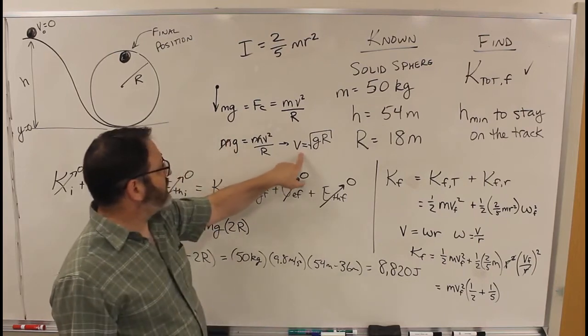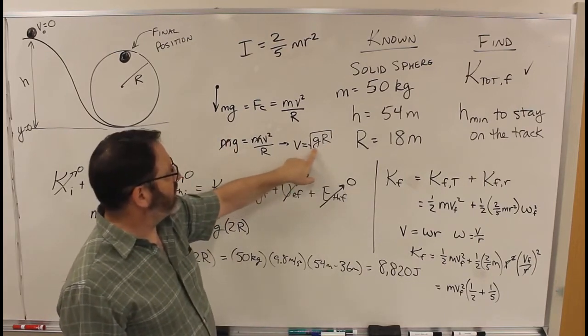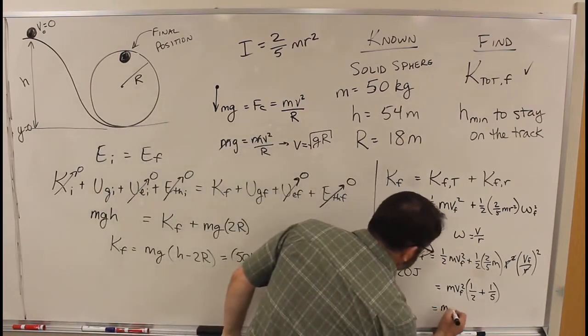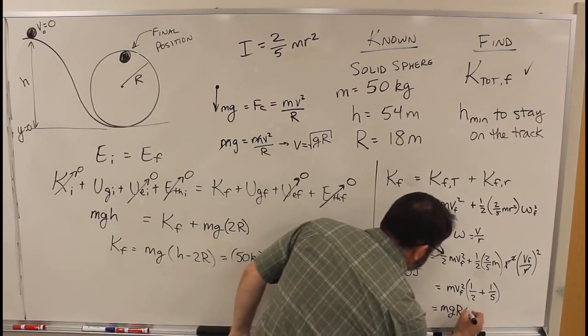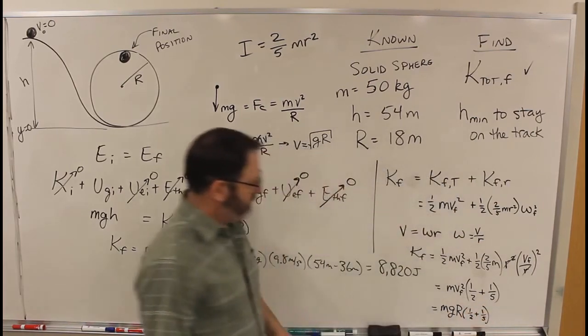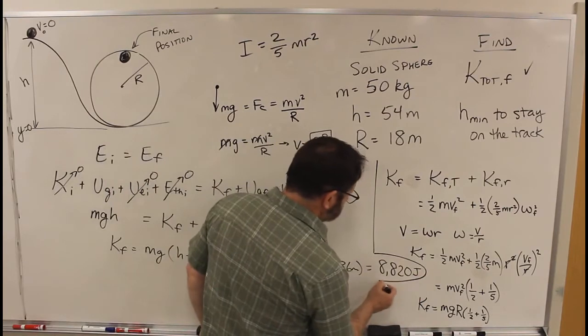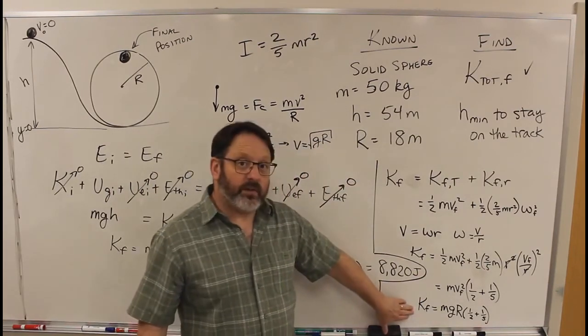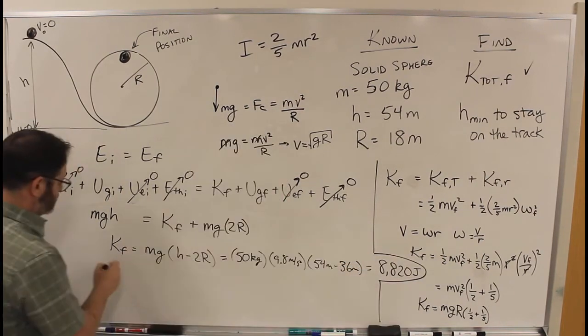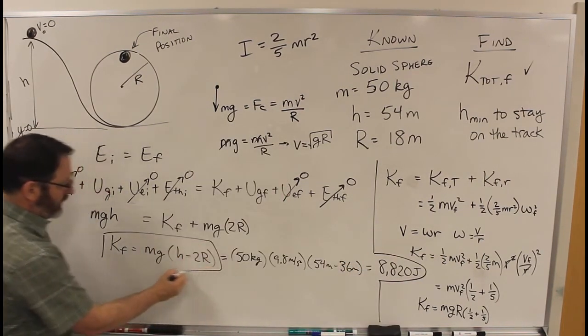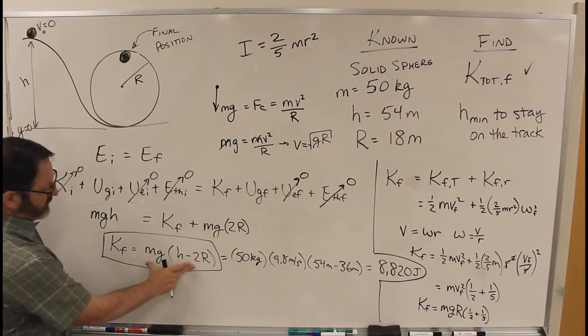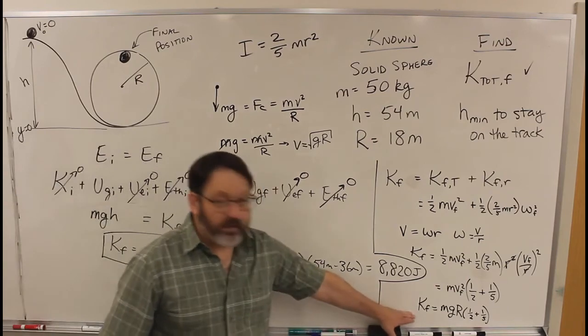Now, we can take this V and make it GR. Okay? So that is MGR times 1 half plus 1 fifth. So for the second part, this is the final kinetic energy that we need. Knowing that K final is equal to this, we can set this K final equal to that one.